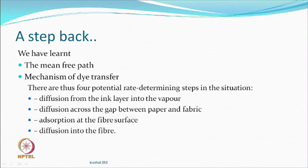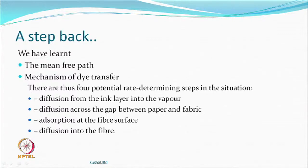In the transfer printing processes, we will be taking this as a last lecture and will try to wind up today. Before this, let us see what we had done and understood last time — how the dye gets transferred from paper to the fabric and what is the mean free path. In the transfer, you have the diffusion of ink from the layer to the vapor, the diffusion of the vapor between the air gap and absorption at the fiber surface and then diffusion. These things are governed approximately by the ideal gas laws.